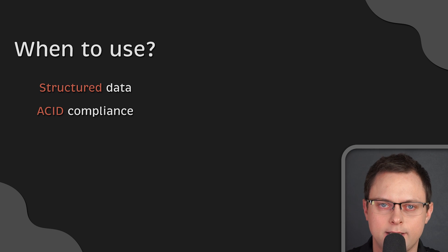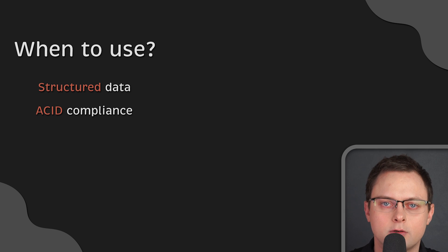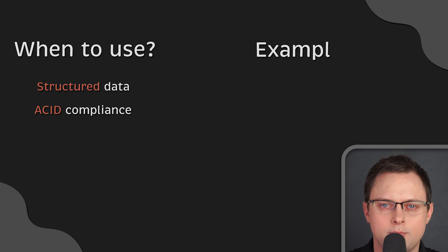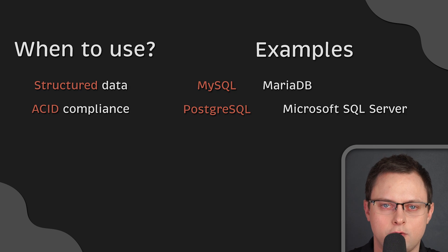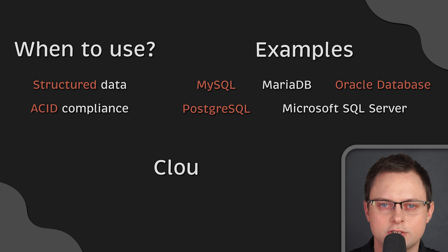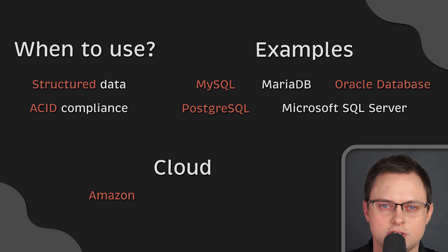Structured data means that you have rows and columns that clearly define data attributes. Some examples of relational databases are MySQL, PostgreSQL, MariaDB, Microsoft SQL Server, and Oracle Database. There are also cloud-managed databases available such as Amazon Aurora, Azure SQL, and many others.